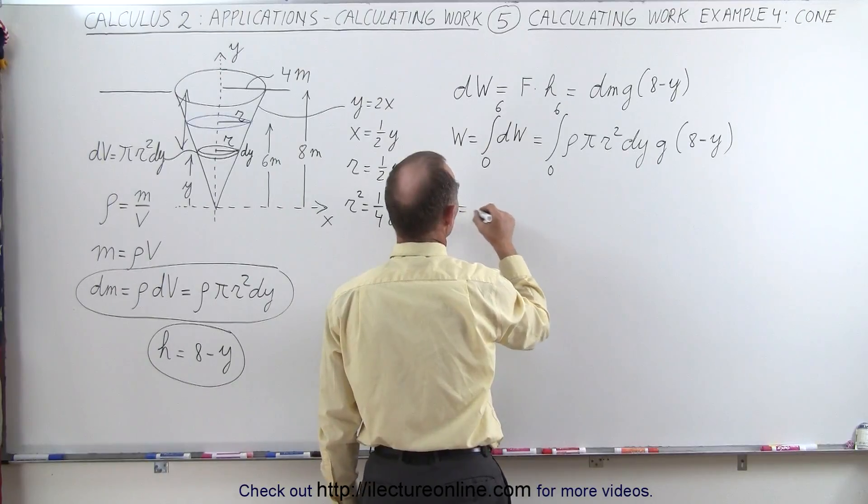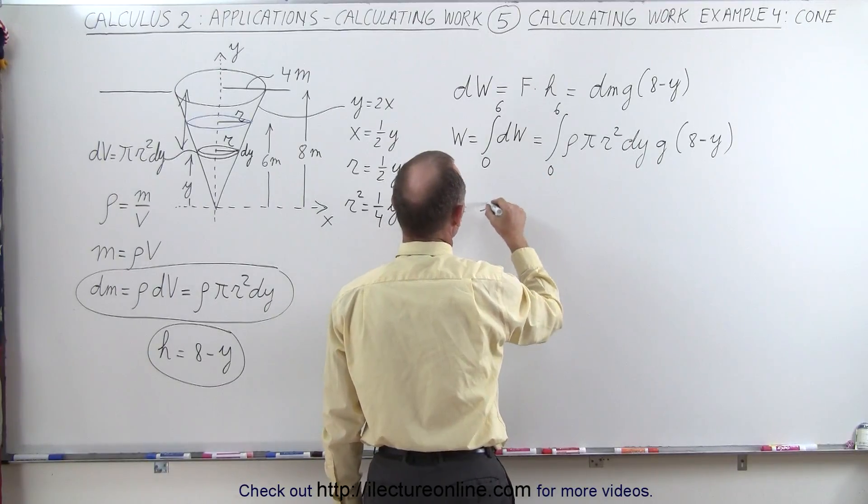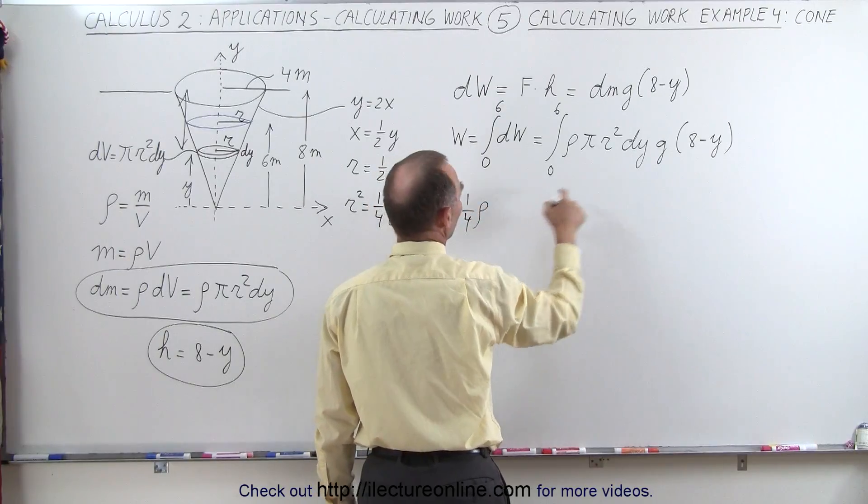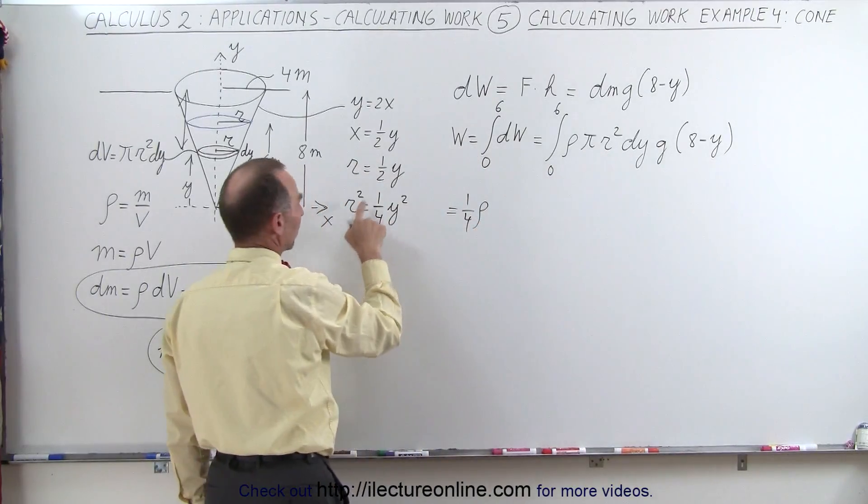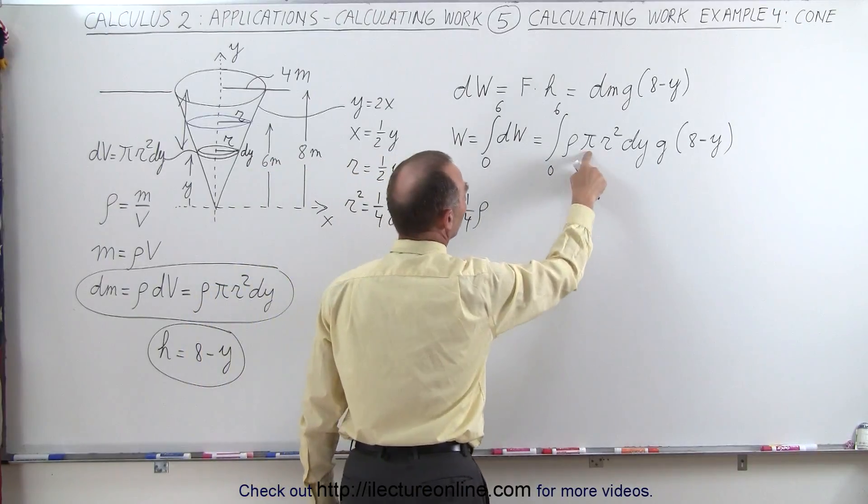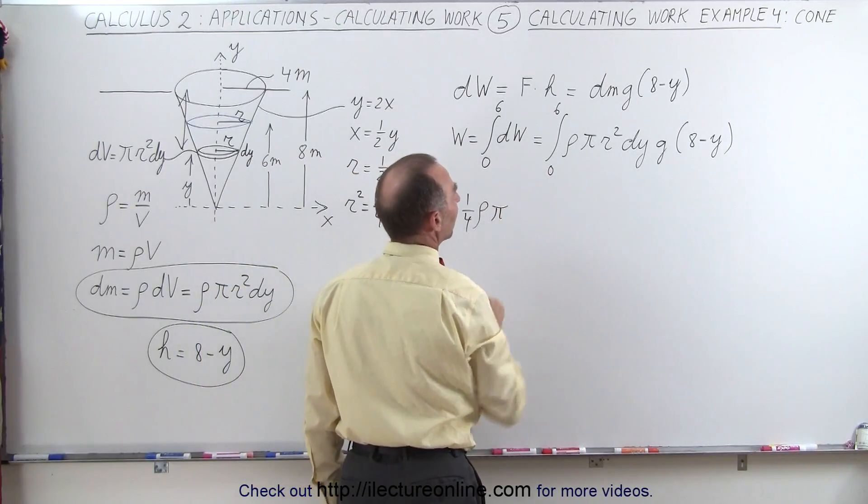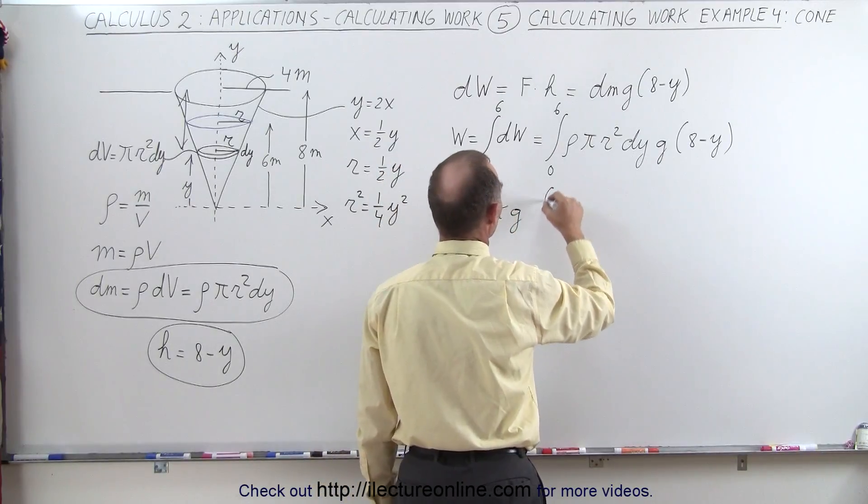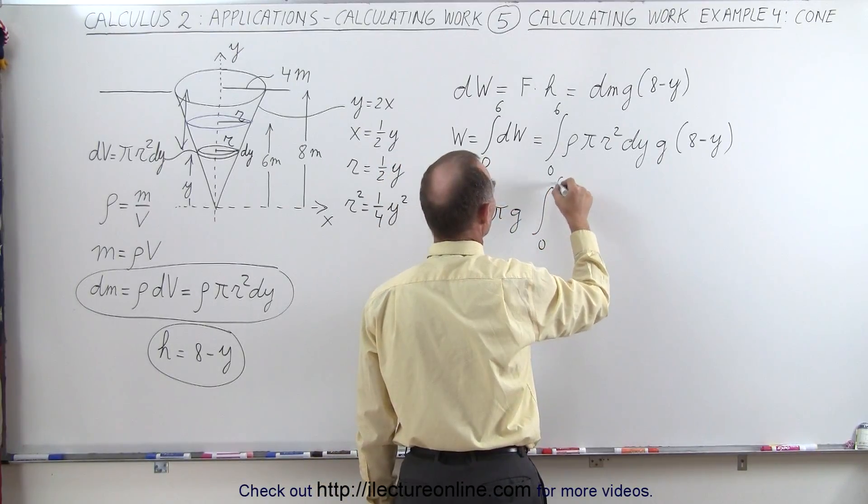So this becomes equal to, we can already pull out a rho. We can pull out the one quarter that's going to go in for r squared. So r squared is one quarter y squared. So one quarter rho times pi times g. Those are all constants. Then we have left inside integral sine from 0 to 6.